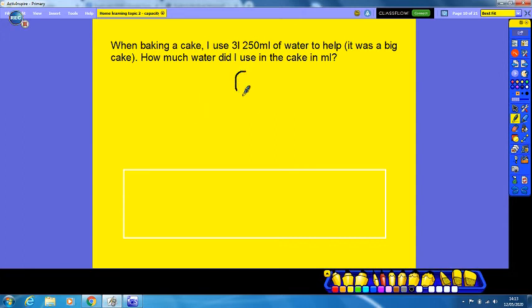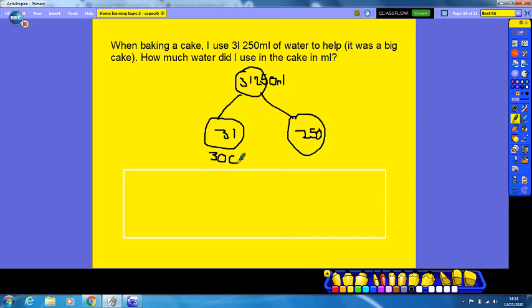So the question asks, how many milliliters did I use if I used 3 liters and 250 milliliters? This time I'm going to use a part-part-whole model to help me. So in the top of my part-part-whole model, I'm going to put my 3 liters and 250 milliliters. Then I'm going to break it down into liters and milliliters, so I'd have 3 liters here, and I'd have 250 milliliters here. But now I need to put it all into milliliters, and we know that as 1 liter is 1,000 milliliters, 3 liters is 3,000 milliliters.